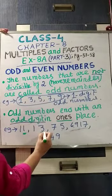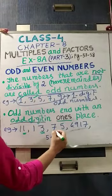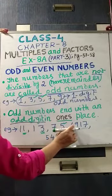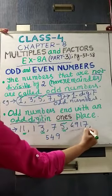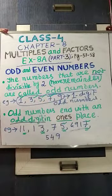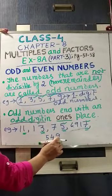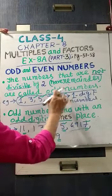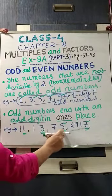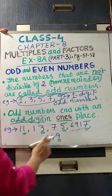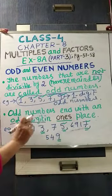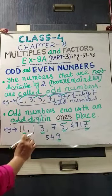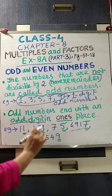Then 75 — one's place, last digit, is 5, an odd digit. 6,917 — one's place is 7, also an odd digit. And the last number, 549 — one's place is 9, also an odd digit. So 11, 13, 75, 6,917, and 549 — these are all odd numbers because all these numbers end with an odd digit in one's place.